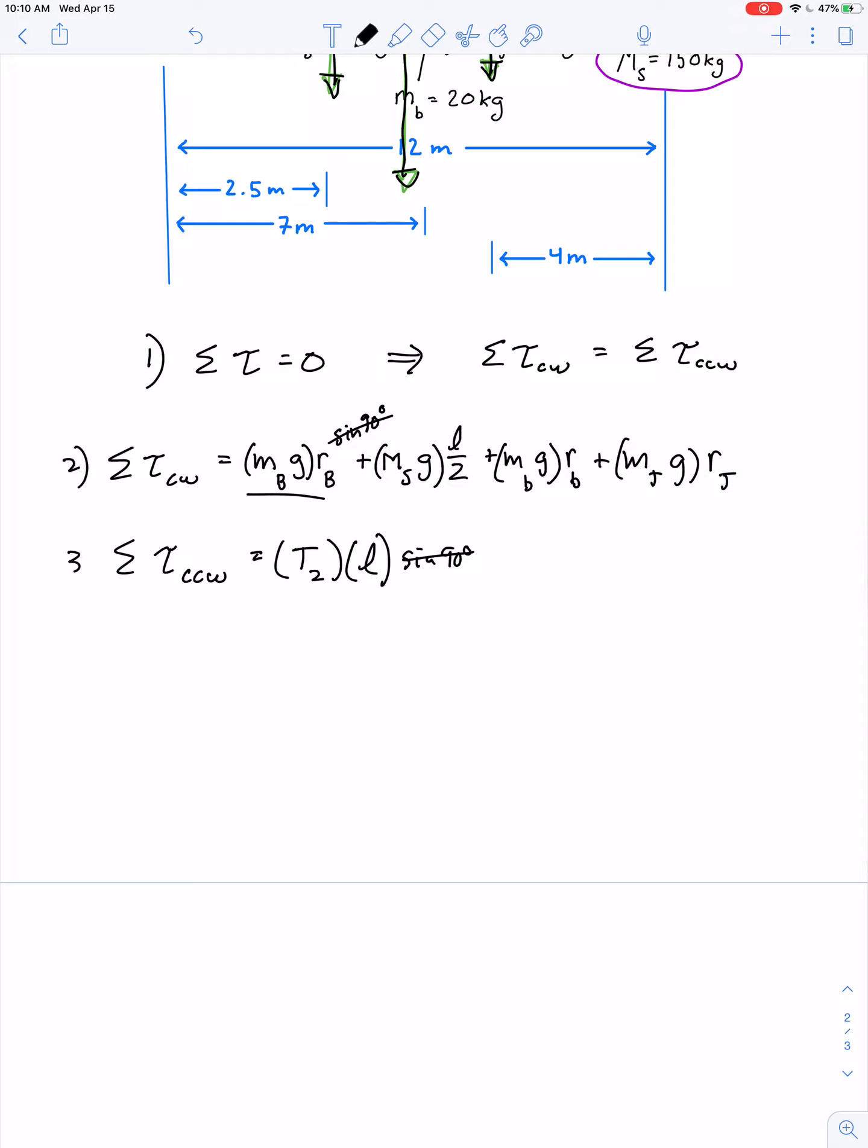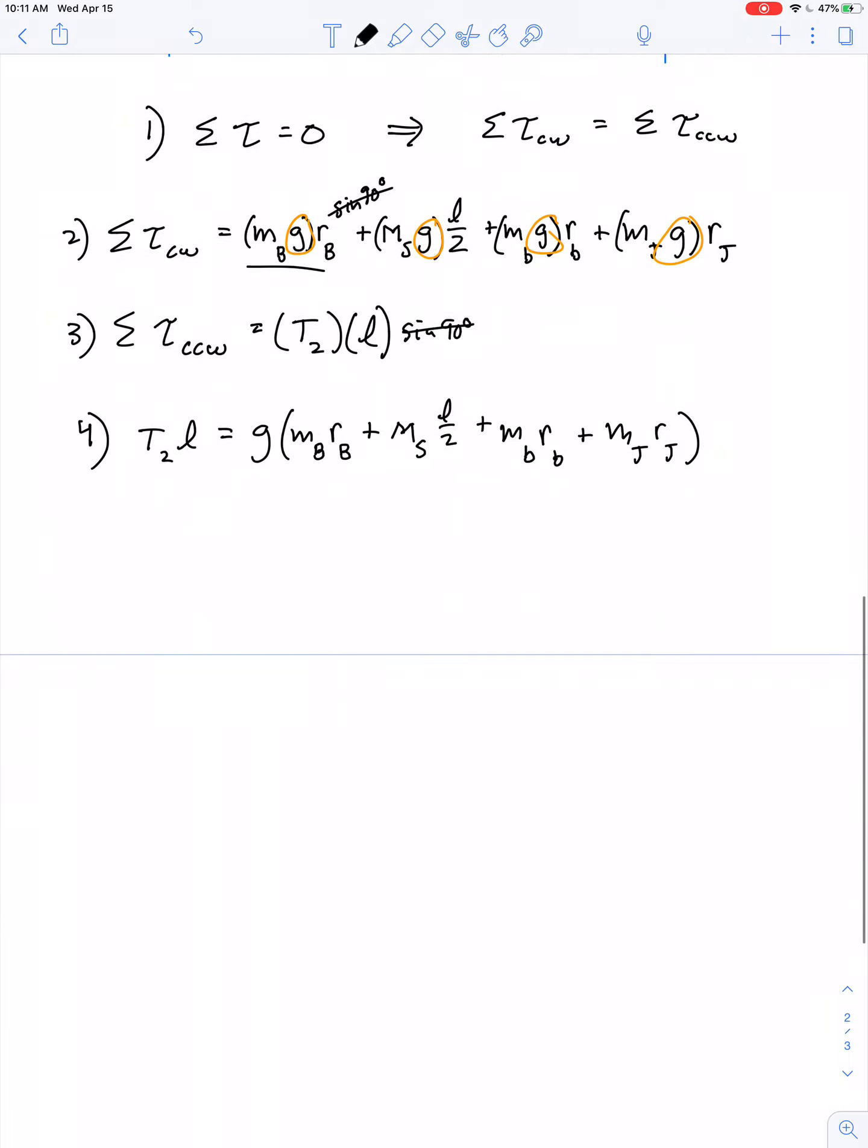The counter-clockwise torque due to the tension in the right cable has to equal the clockwise torques. There's a g in every single term, so let's factor that out: g times (mass of Bob times r_b plus mass of scaffold times l/2 plus mass of bucket times r_bucket plus mass of Joe times r_Joe). To get the tension in cable two, divide both sides by the length of the scaffold.